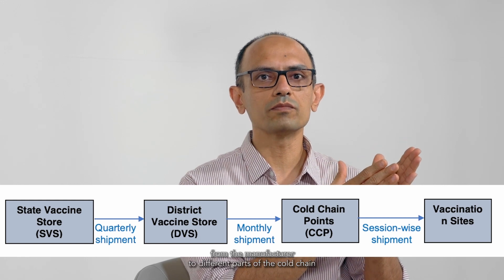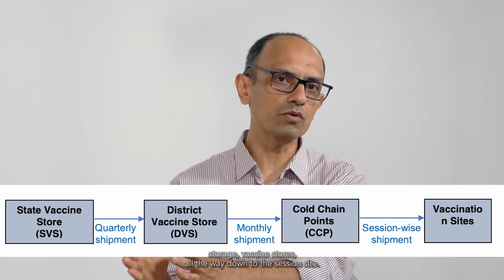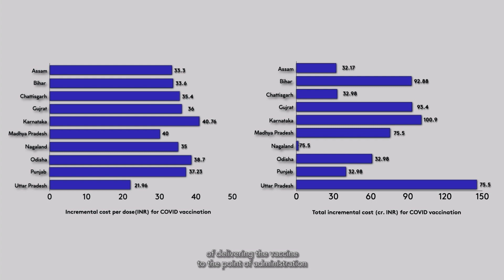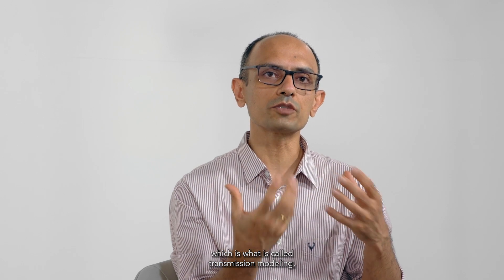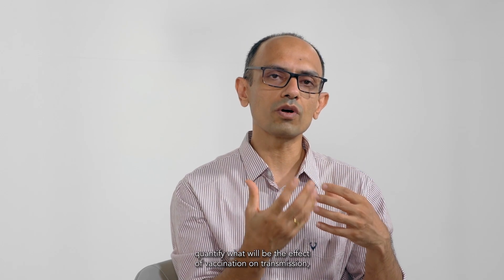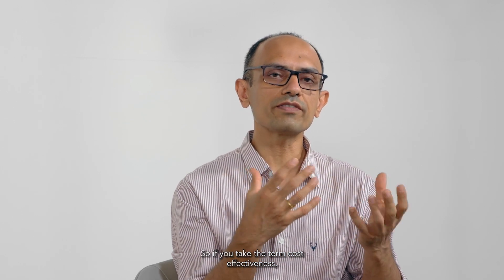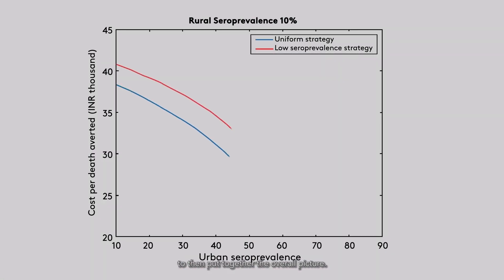One is a supply chain model — tracking how vaccines come from the manufacturer through different parts of the cold chain, storage, vaccine stores, all the way down to the session site. Tracking this flow helps us calculate the cost of delivering the vaccine to the point of administration. We combine this with the other component, called transmission modeling, which calculates the effect of vaccination on transmission, new COVID cases, hospitalizations, and deaths. Cost comes from the supply chain component and effectiveness from the epidemiological model, putting together the overall picture.